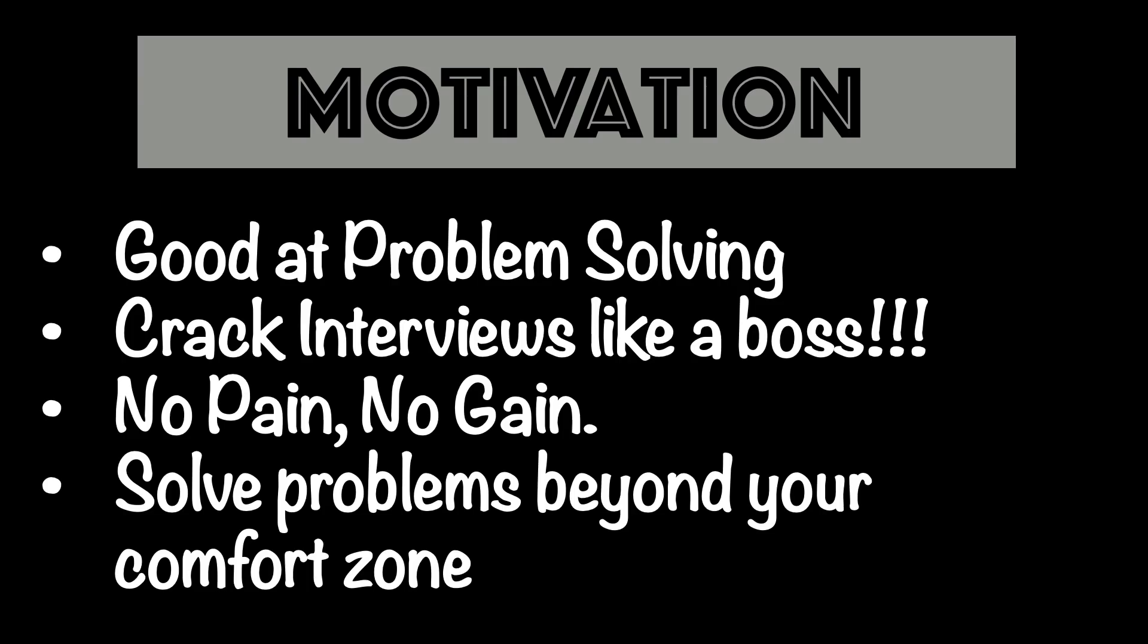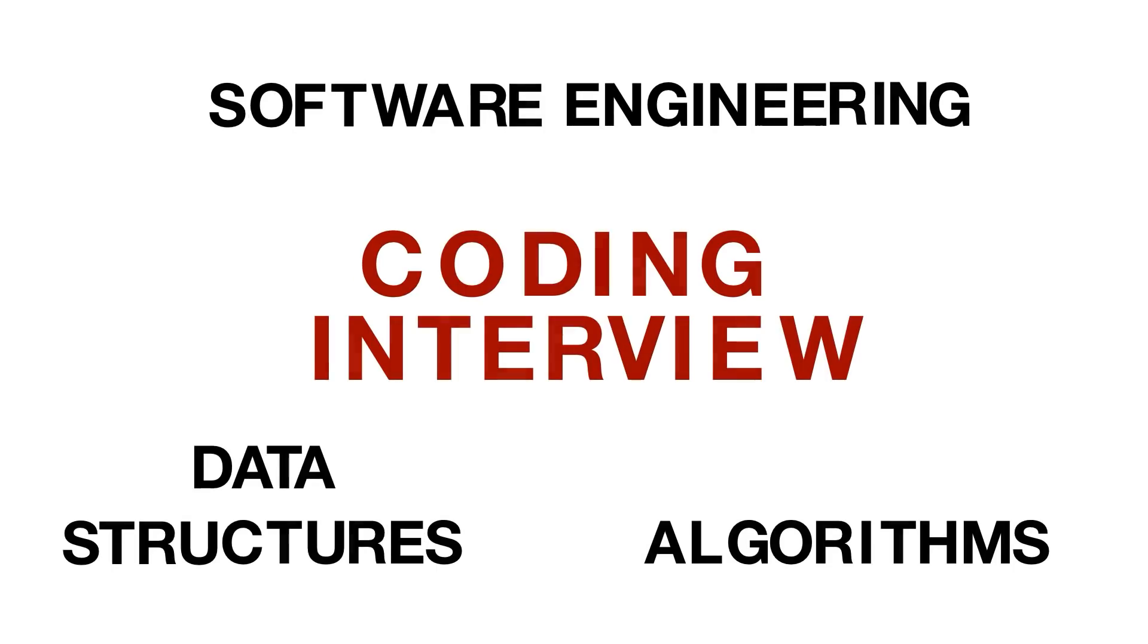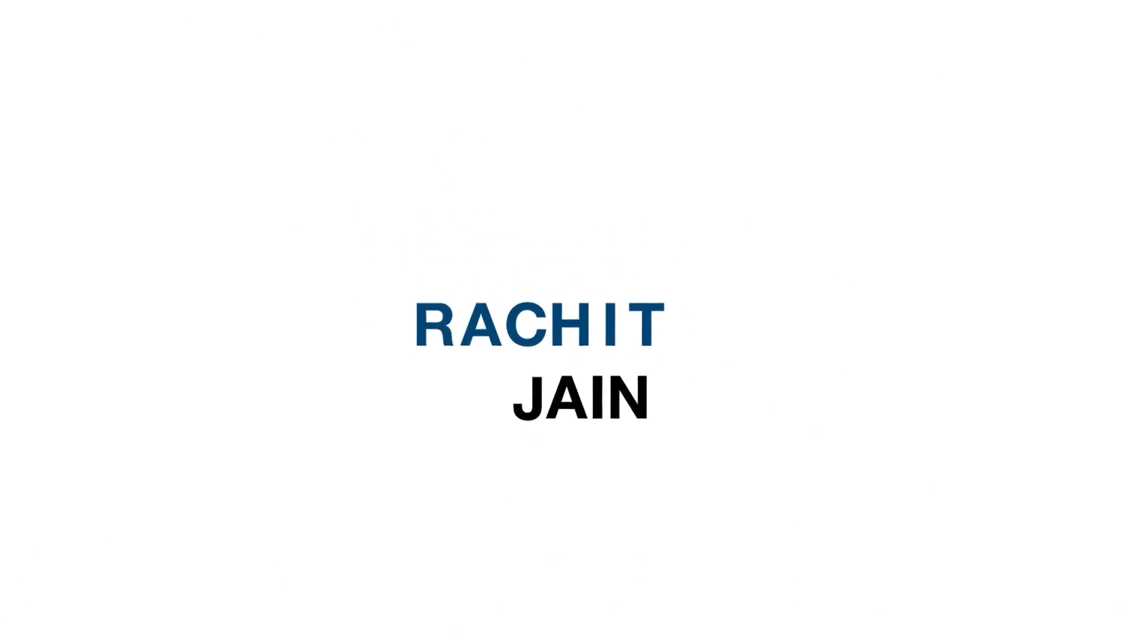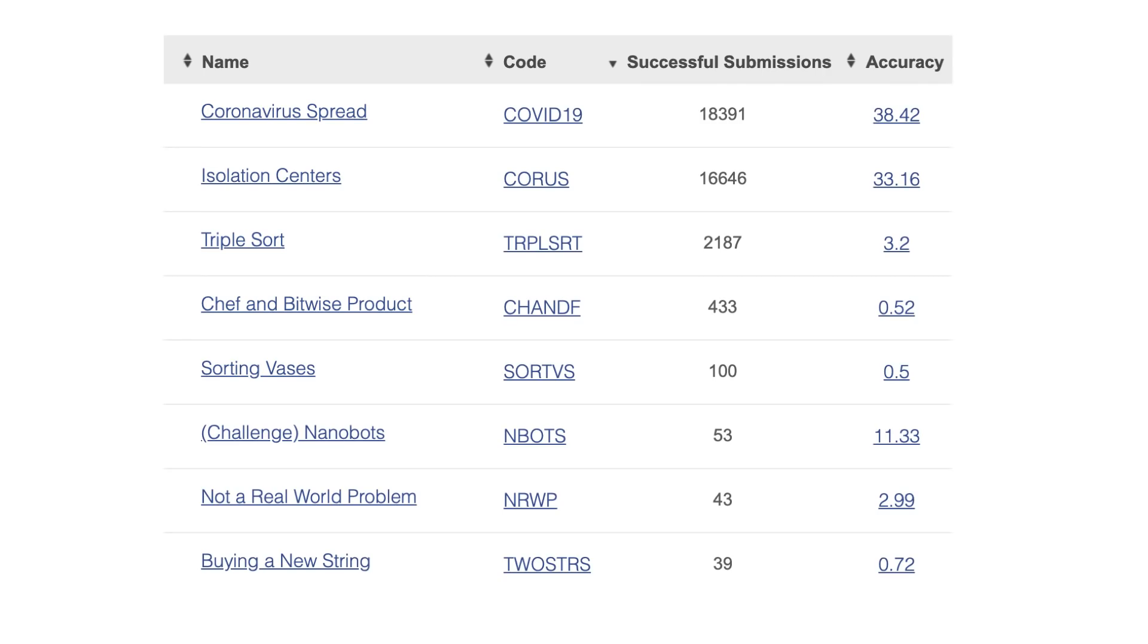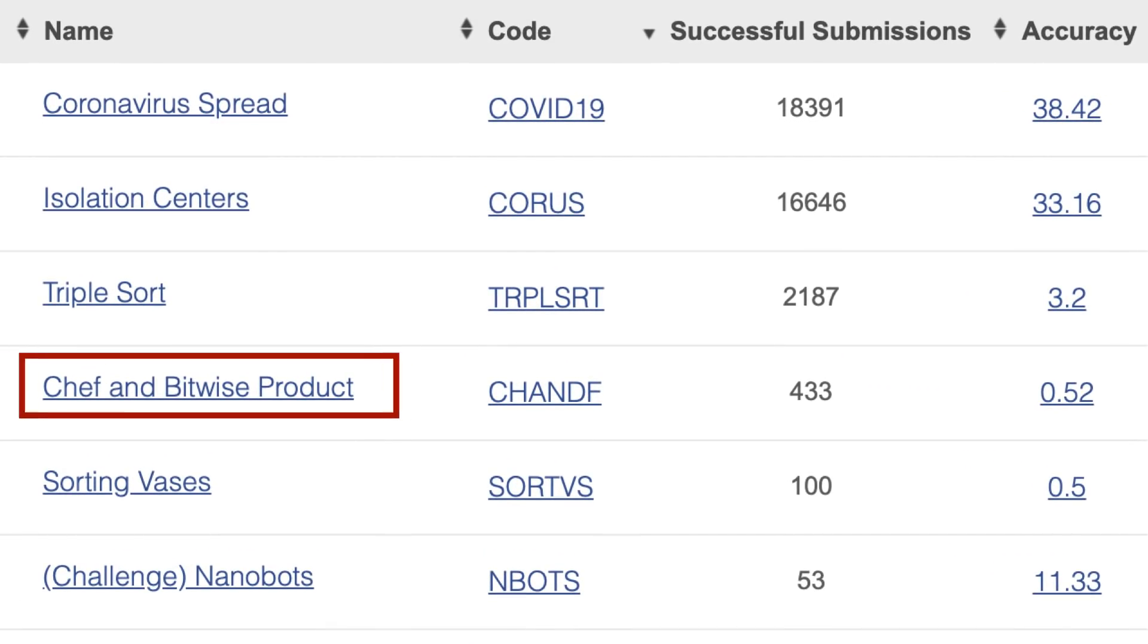If you really couldn't solve this problem on your own, I would say like how it follows in gym - no pain, no gain. Similar is with competitive programming or your data structure and algorithm skills. There were eight problems in CodeChef May Challenge and today we will be talking about the Chef and Bitwise product which only had 433 submissions. It's really low as compared to around 18,000 submissions for the first one. The accuracy is also very very less.